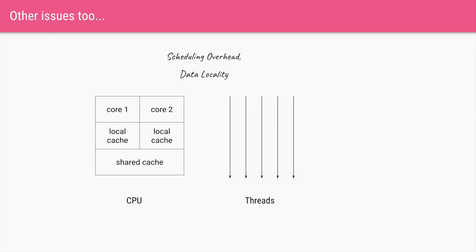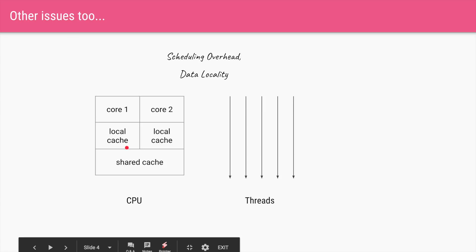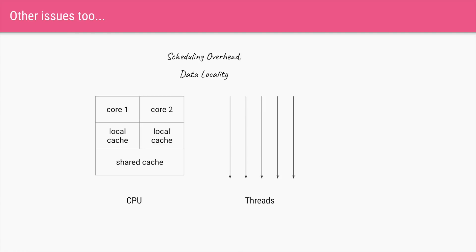Let's say you have a lot of threads and a CPU with only two cores. Every core will have some local cache. Say core one is running thread one and the local cache has all the data required by thread one. Now if there are a lot of threads, you have to schedule another thread at some point — say thread three. For that you'll have to flush the cache, removing all data belonging to thread one and putting in all data required by thread three, and then core one can stop thread one and start thread three.